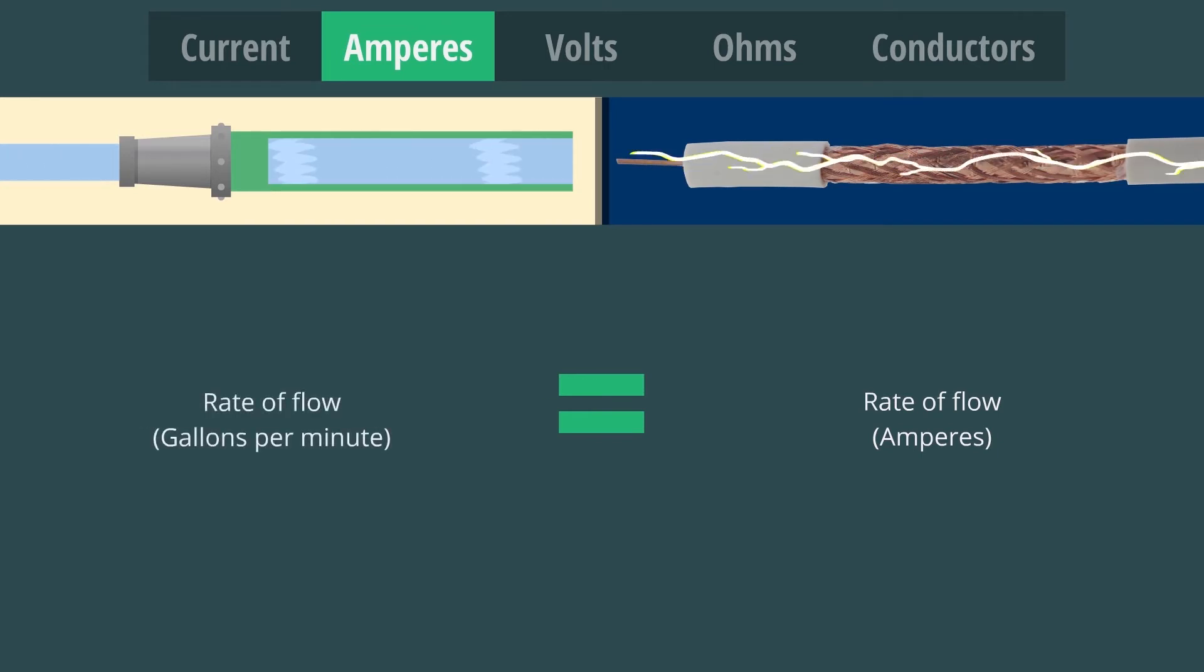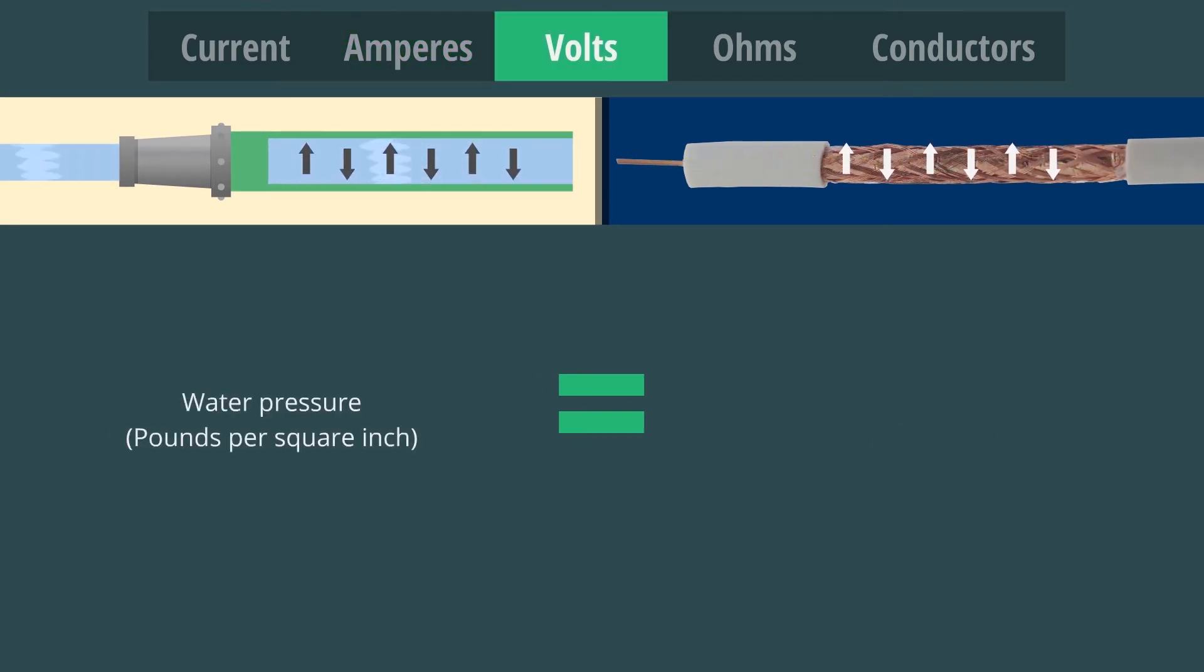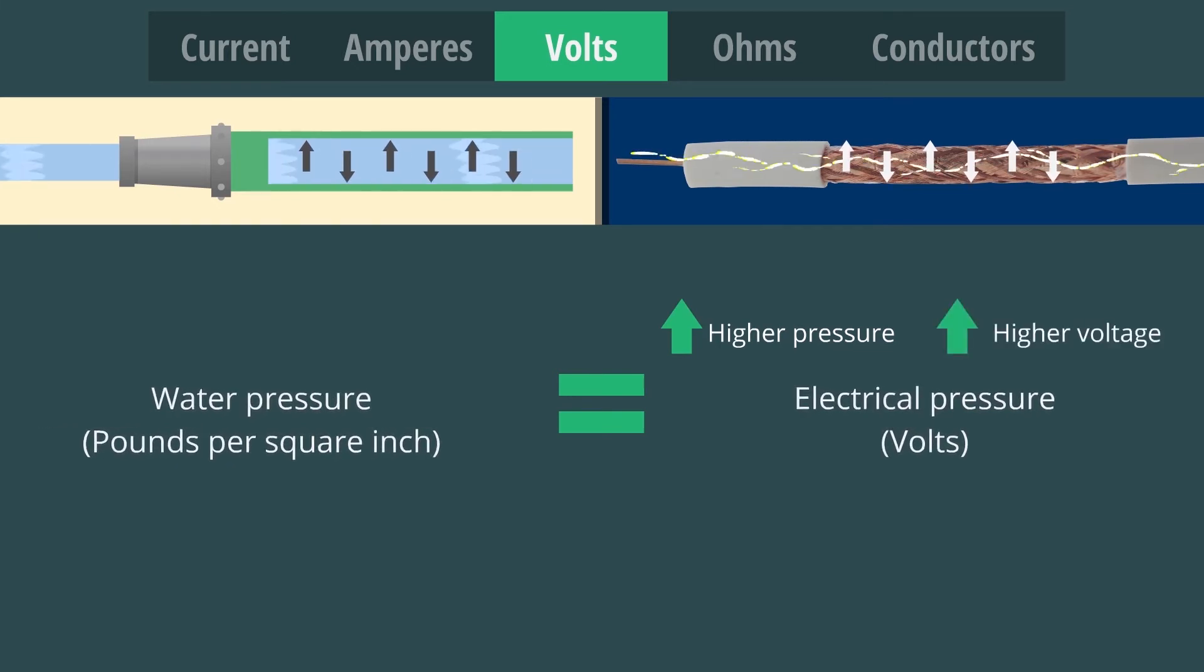Similarly, the water flowing through a garden hose is measured in gallons per minute. The water pressure in the hose is measured in pounds per square inch, whereas electrical pressure is measured in volts. We must also understand that the higher the pressure, the higher the voltage.